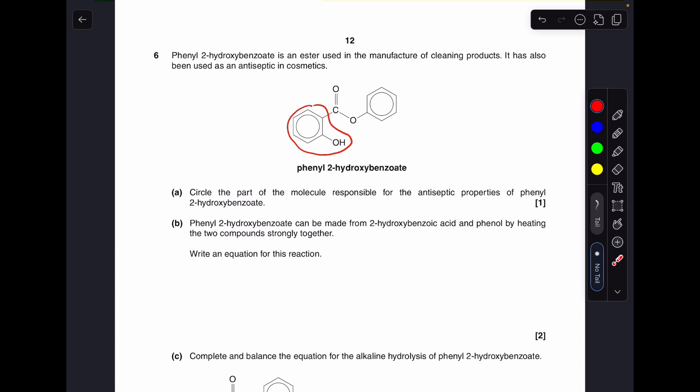Okay, so I'll make a start. I've already circled the part of the molecule responsible for those antiseptic properties, and it's the phenol group. Moving on to part B, phenyl-2-hydroxybenzoate is an ester, so to get this part of the molecule here, you could either use a carboxylic acid group there. That could be a chlorine, so an acyl chloride would work as well.